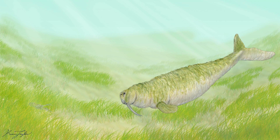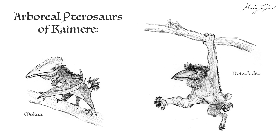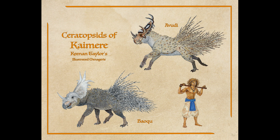As in Dixon's work, convergent evolution is key to many of my designs. When creating the Mogao, an aquatic Dicynodont, I look to animals like walruses and manatees that fill similar niches for inspiration on its design. There are two clades of arboreal, that is tree-dwelling, pterosaurs in Chimer, with one group evolving adaptations similar to primates like apes, and the other more resembling sugar gliders and flying squirrels. As I design the cursorial horned dinosaurs, I look to ungulates as well as porcupines and hedgehogs to speculate how the ornamental filaments of related species may have been adapted into a defensive feature.